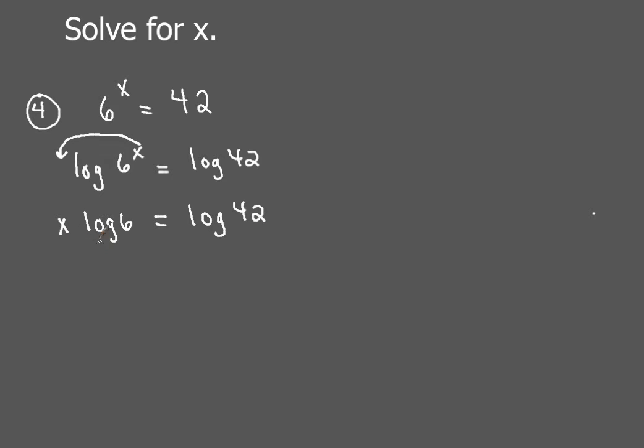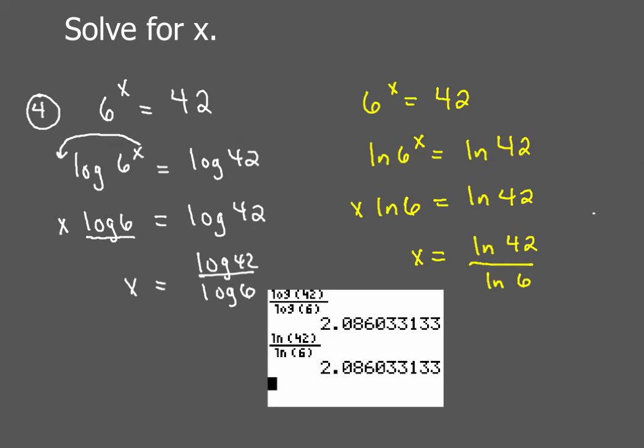Now, solving for x is pretty straightforward. You're going to take this log of 6 piece, and you're going to divide both sides by that. So you're going to get x equals log 42 over log 6. Now, if we would have done this using natural log instead, it would just look like this.